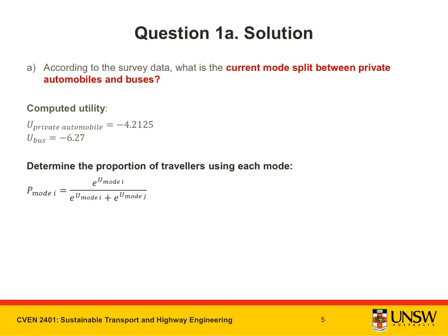Now we can use these utility values to determine the proportion of travelers using each mode. We use the binary logit model, which says that the traveler evaluates the utility of both modes of transport — private automobile and bus — and then chooses one of the two. The proportion of travelers who would choose to use private automobiles is equal to e raised to the power of the utility for that mode, divided by the exponentiated utilities summed across all modes.